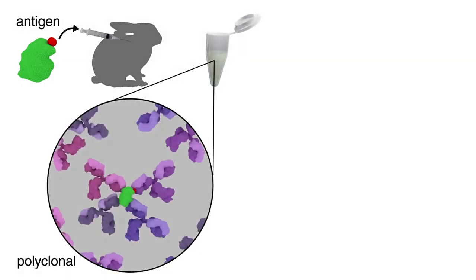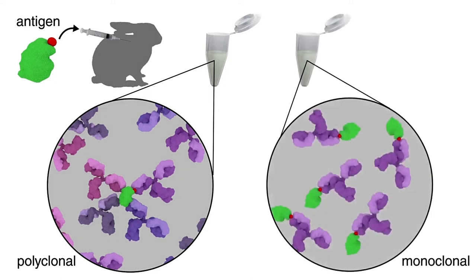A polyclonal antibody preparation contains a mixture of heterogeneous antibodies against multiple sites of the antigen. A monoclonal antibody preparation contains an antibody that recognizes only one site on the antigen.